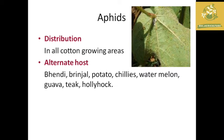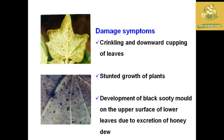Next is Aphid. It occurs in all cotton growing areas. The alternate hosts include bhendi, brinjal, potato, chilli, and others.